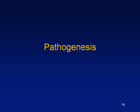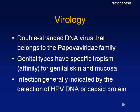As far as the virus itself: HPV is a double-stranded DNA virus belonging to the Papovaviridae family — a larger family of DNA viruses. Genital types have specific tropism for genital skin and mucosa. However, as sexual trends change, this virus does not limit itself to the genitalia — it can also infect the oral mucosa and pharynx, and this is something the virus has adapted over time.